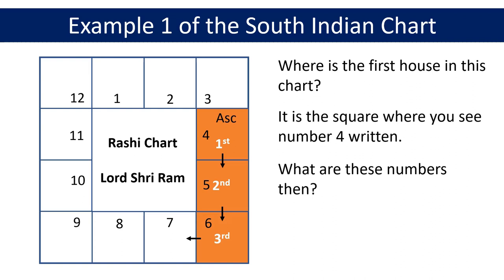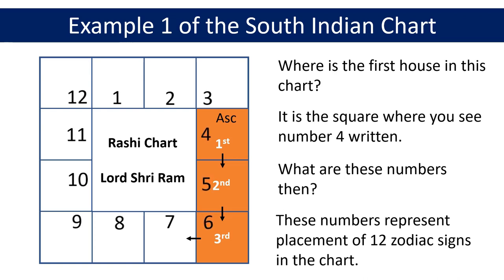So what are these numbers? These numbers represent the placement of the 12 zodiac signs or Rashis in the chart — one representing Aries or Mesha, two representing Taurus or Rishabha, three representing Gemini or Mithuna, and so on until number 12 representing Pisces or Mina. The positions of these 12 zodiac signs are always fixed in the South Indian chart. In this chart the sign of the ascendant is Cancer or Karka, represented by number four, so we can refer to it as Cancer ascendant or Karka Lagna.